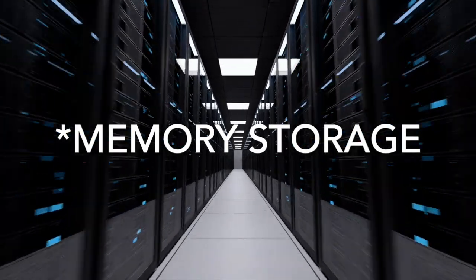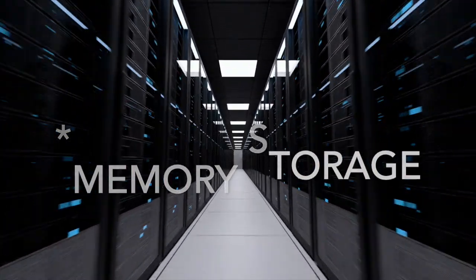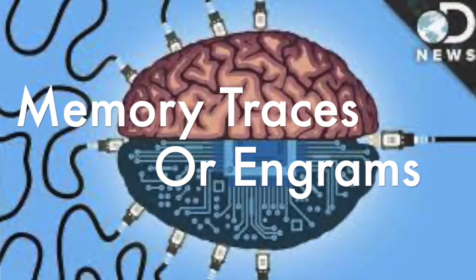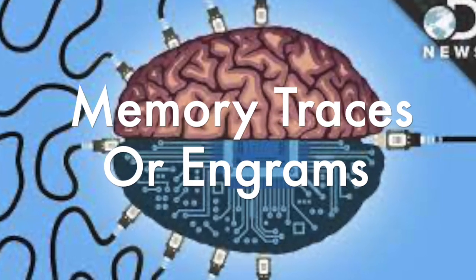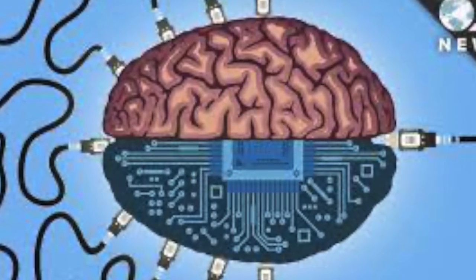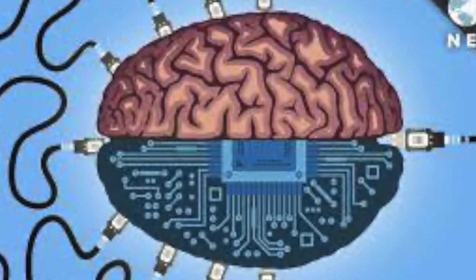The next stage is memory storage, which is encoding and consolidating these experiences in the brain, resulting in memory traces or engrams, which refer to the physical change that takes place in the nervous system that represents an experience.